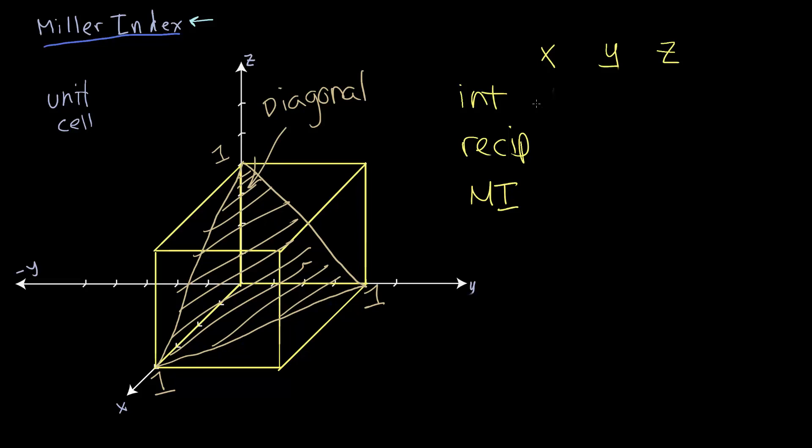So we have intercepts. We'll just follow the same procedure as before. We have intercepts at x, y, and z equals 1. And the reciprocal of these gives us, again, 1, 1, and 1. And since we don't have any fractions, we can directly write down the Miller index.